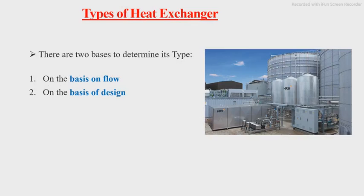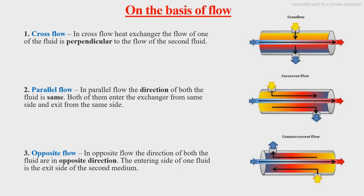Next are the types of heat exchanger. To determine the type there are two bases: the first is on the basis of flow and the second is on the basis of design. On the basis of flow we have three types. The first is cross flow, where the flow of one fluid is perpendicular to the flow of the second fluid. Here in this figure you can see the first fluid and the second fluid are perpendicular to each other.